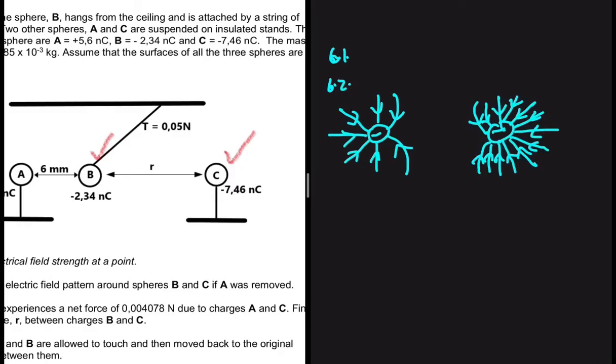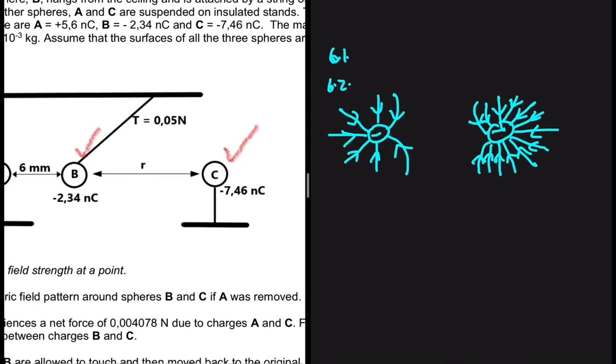So we're going to have an electric field that looks like the following. There we go. So I want you to realize something. Sphere B has a magnitude of 2.34 nanocoulombs and sphere C has a magnitude of 7.46 nanocoulombs.